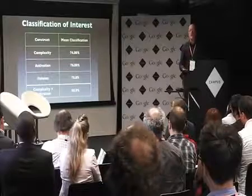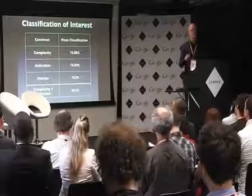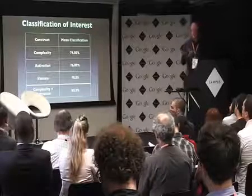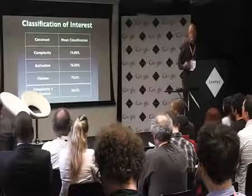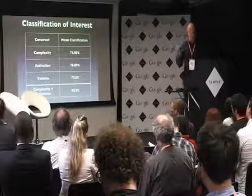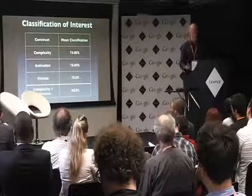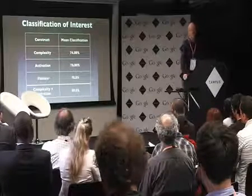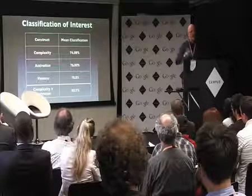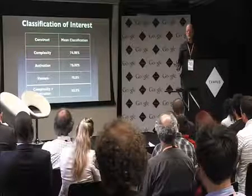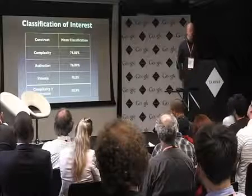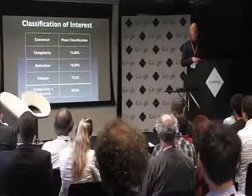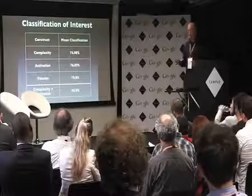Our activation measure — heart rate and skin conductance — correctly classified interest three quarters of the time. When we combined complexity and activation, putting EEG and heart rate together, classification rose to about 80%, which is modest. These classification rates are modest — I wouldn't make a big deal of them — but you have to remember people are just standing and passively listening to information; it's a very low-key, not terribly provocative task.